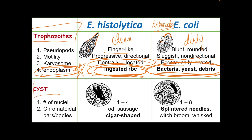For the cyst stage — the dormant, non-motile stage — the mature cyst is the infective stage. For the number of nuclei: E. histolytica has 1 to 4, whereas E. coli has 1 to 8. The karyosome of the E. histolytica cyst is also centrally located, just like in the trophozoite. E. coli has 1 to 8 nuclei and its karyosome remains eccentric.